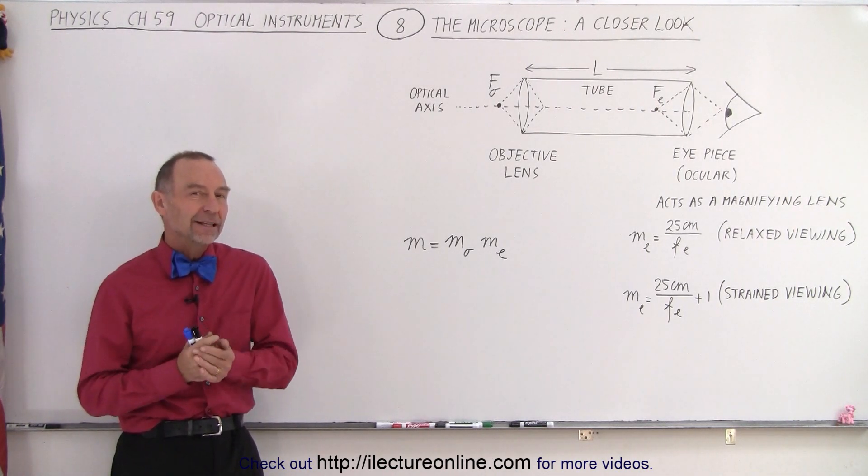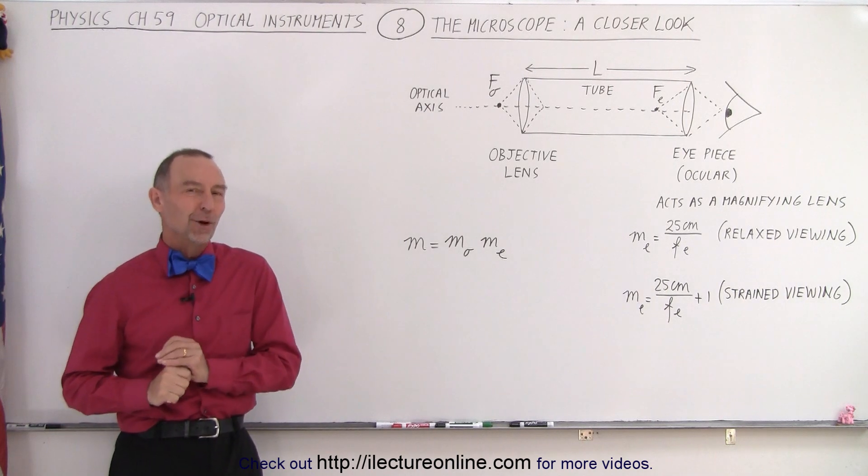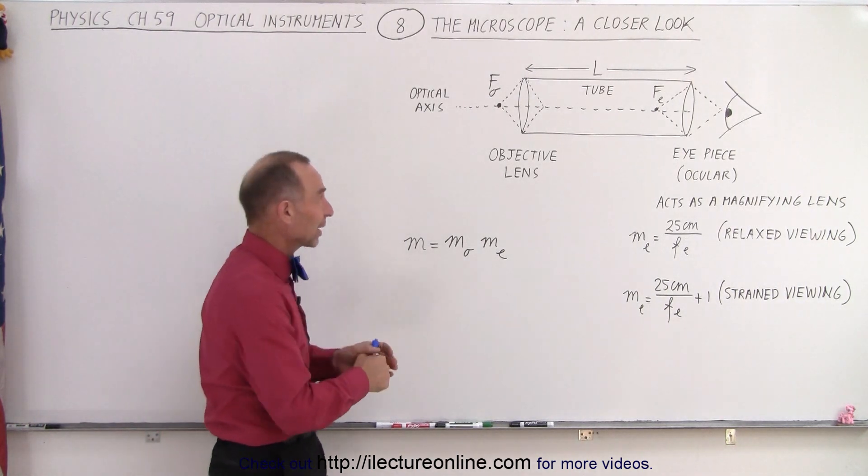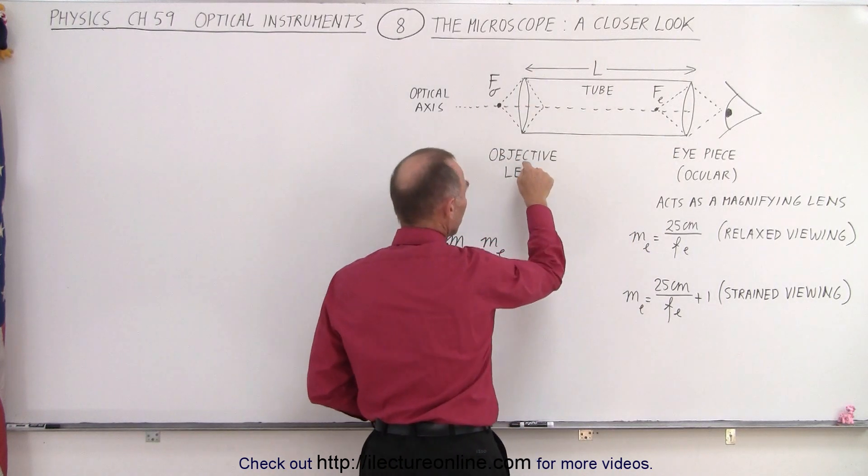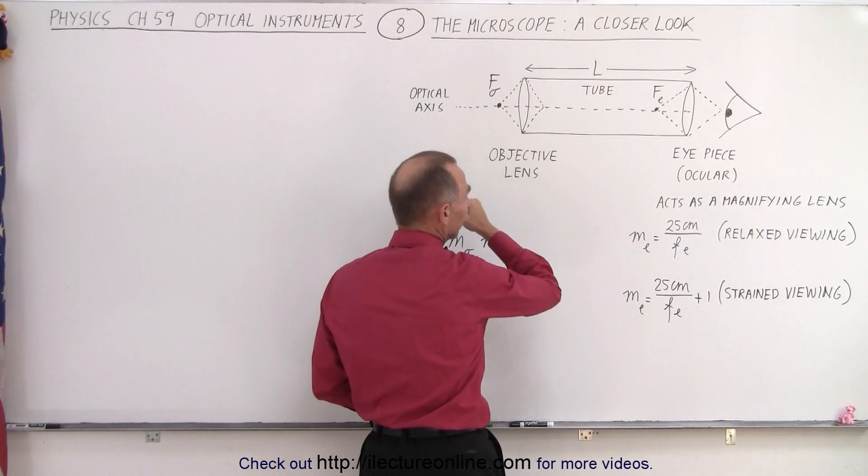Because essentially, the magnifying glass is half of the microscope. So here's a schematic of a microscope. We have the tube at the front end, we have what we call the objective lens, or simply called the objective.